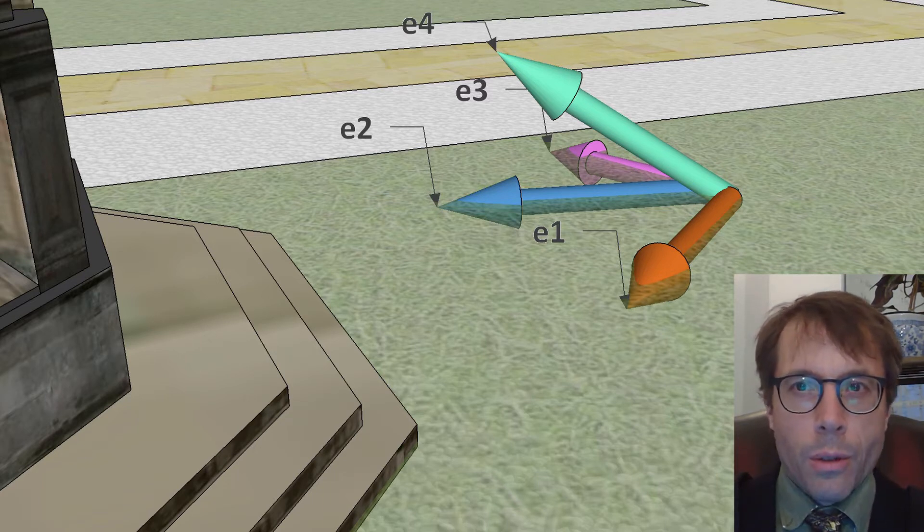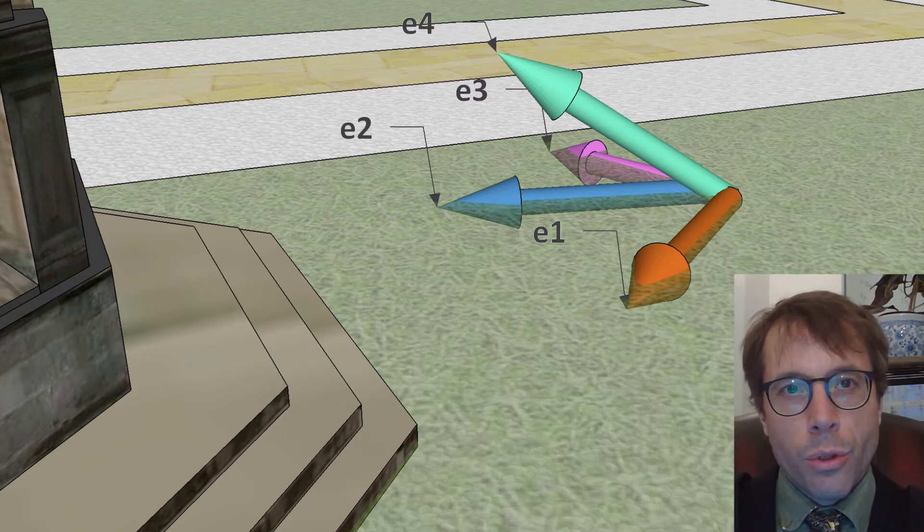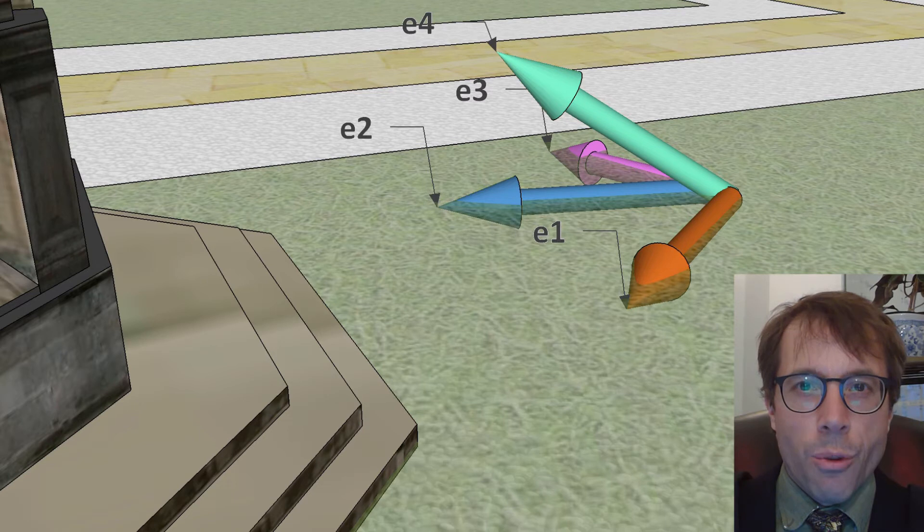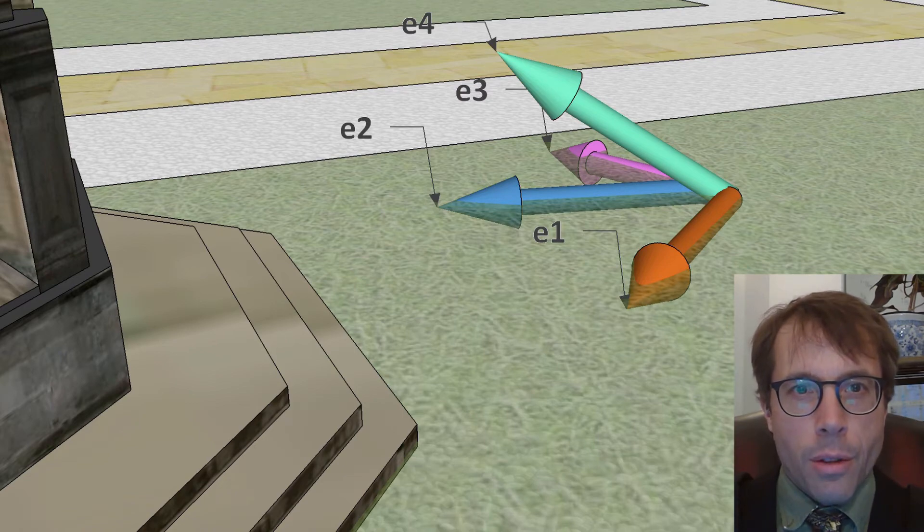In this picture it looks to me like e2 is equal to e1 plus e3, or we could write it differently, e3 equals e2 minus e1. In other words, because we have three arrows spanning only two dimensions, we can always write one of them as a linear combination of the other two.